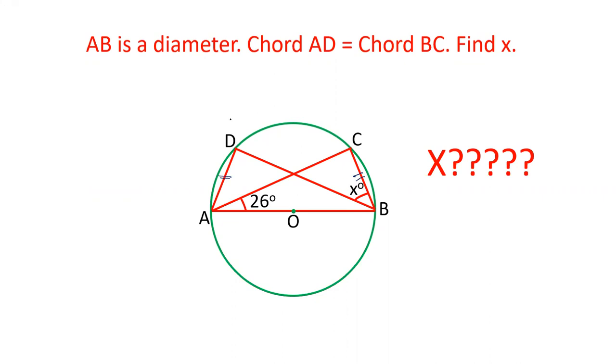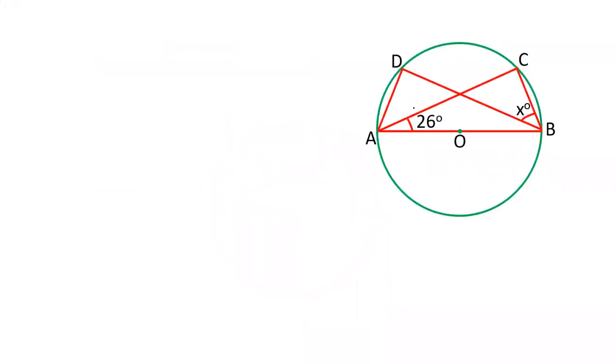Let us see how we can solve this question. First of all, if AB is the diameter, that means angle D is 90 degrees. And similarly, angle C is also 90 degrees. It is also given that AD equals BC.